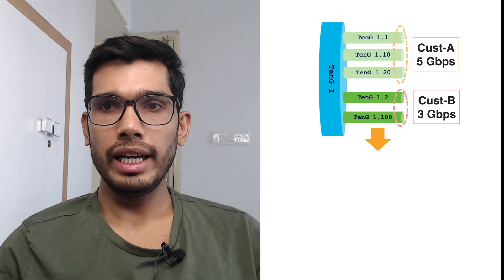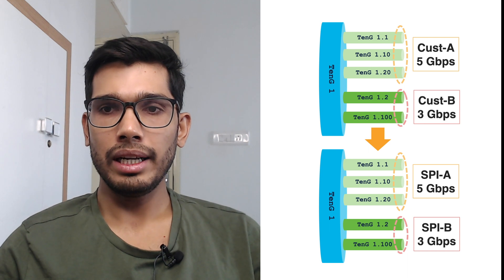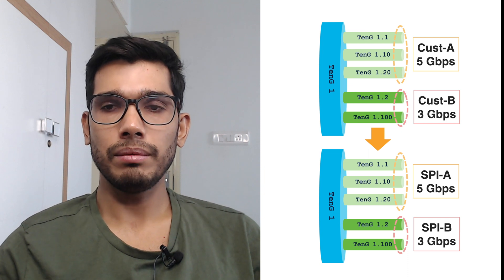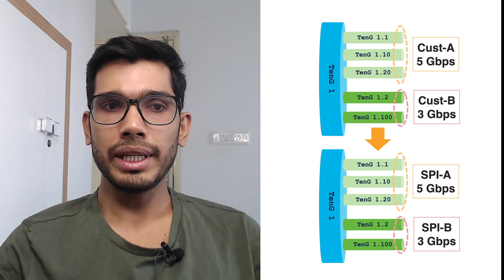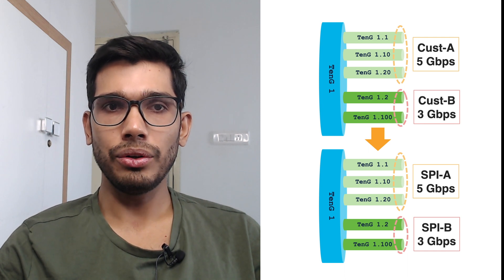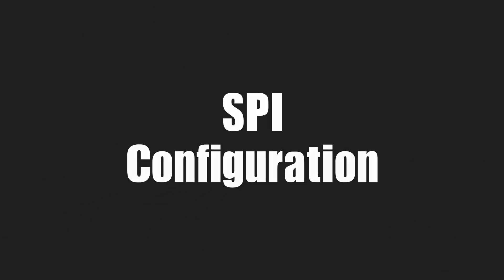If I need an aggregate SLA of 5 Gbps for the services of Customer A, I can have an SPI for 5 Gbps on those sub-interfaces that belong to Customer A. The bandwidth profile is actually shared. For ingress, it is the same set of policer IDs for each sub-interface, or for ingress all the sub-interfaces will share the same set of VOQs. The scope of this policy sharing is limited to the same parent interface — that is, the same physical interface or the same bundle interface.